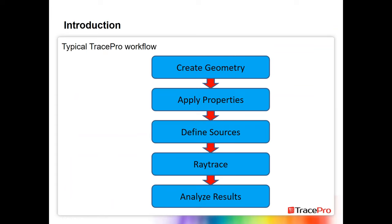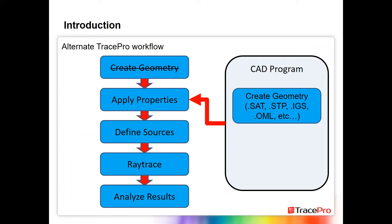As an alternative workflow, you could work with a CAD program such as SolidWorks, CATIA, Pro/Engineer, or Inventor — really any CAD program. Create the geometry there and export it as a STEP, SAT, or IGES file, or using the TracePro Bridge for SolidWorks, an OML file. Export that to TracePro, then apply properties, define sources, run the ray trace, and analyze the results.